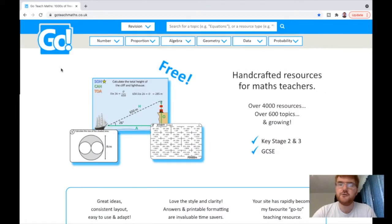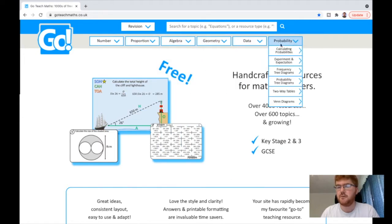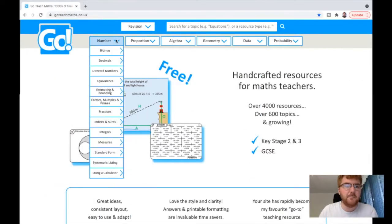So let's start with how it's grouped at the top. We have number, proportion, algebra, geometry, data, probability. That makes it into concepts, into the different ways you can split up mathematics. Let's go and investigate one of those.